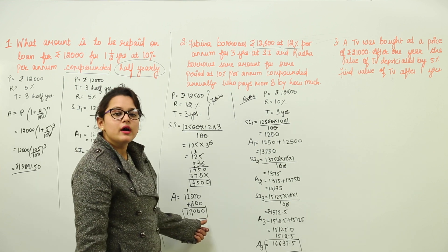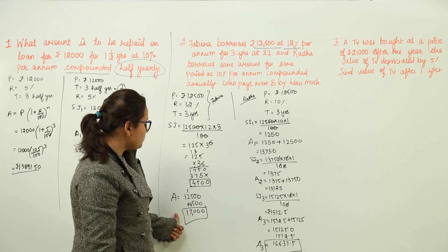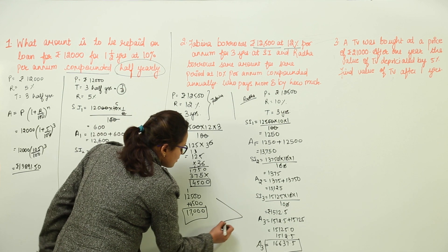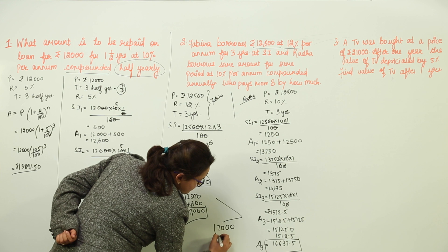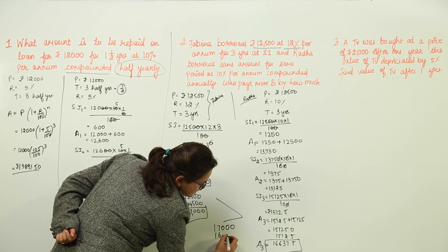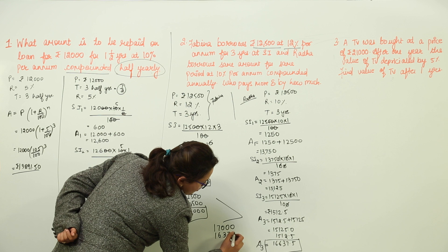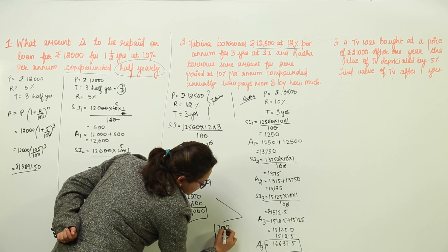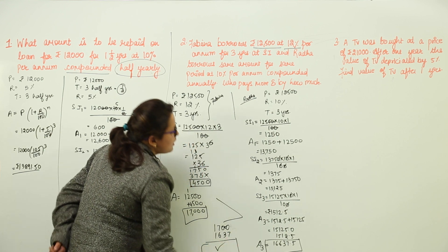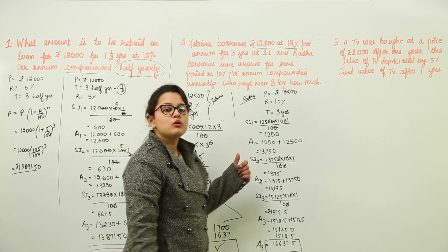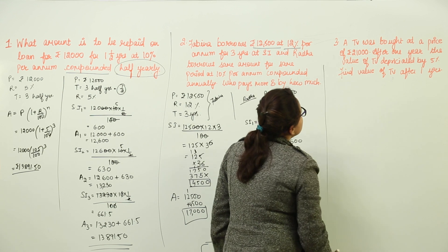Comparing the two: Fabina pays Rs. 17,000 and Radha pays Rs. 16,637.5. Obviously Fabina pays more. By how much? Subtract 16,637.5 from 17,000 to find the difference. Now let us move on to the third question.